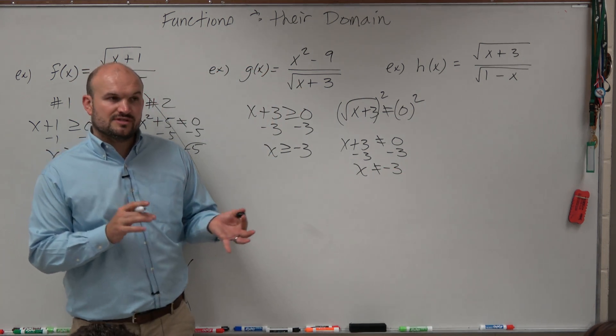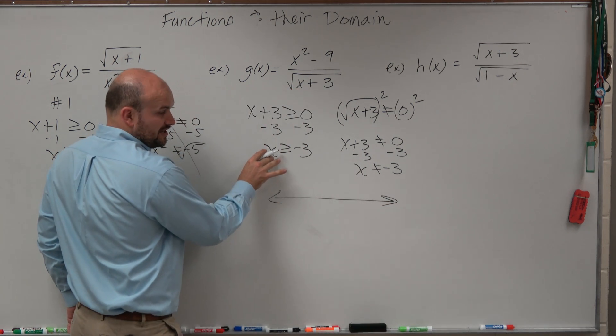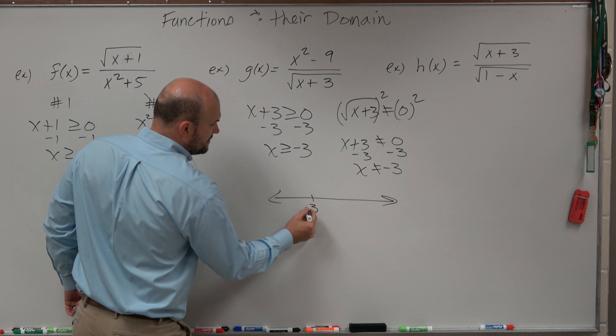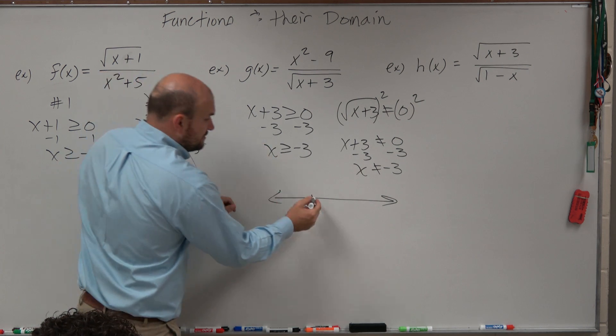So I'm going to use the number line method in this case. x has to be greater than or equal to negative 3, so I go to negative 3. Now, in this format, it's included, right? It'd be a closed circle, right?